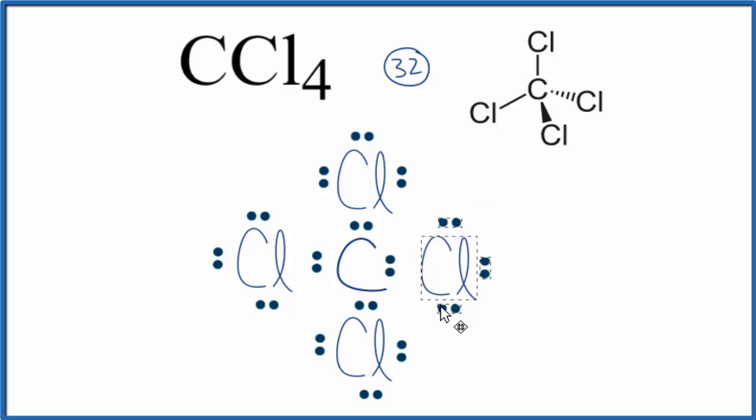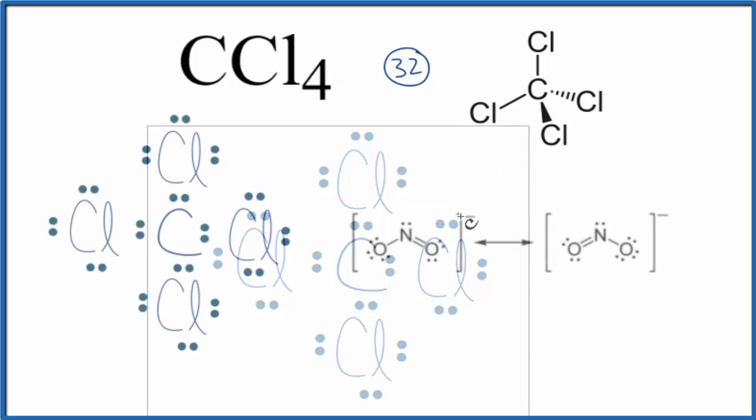This is the best Lewis structure for CCl4. There's really no other way to draw it, so we don't have resonance. In contrast, let's take a look at an example where you would have resonance.